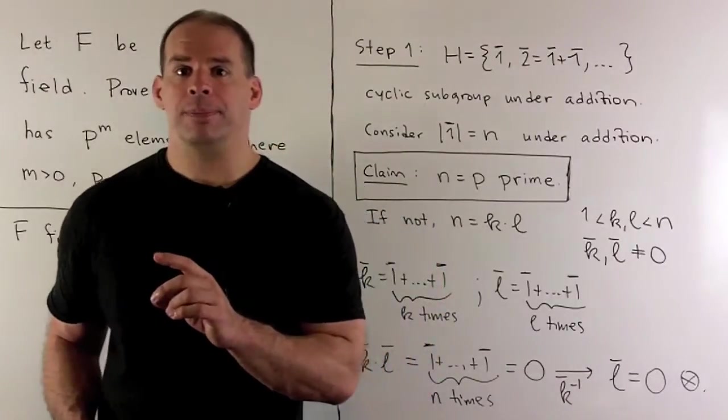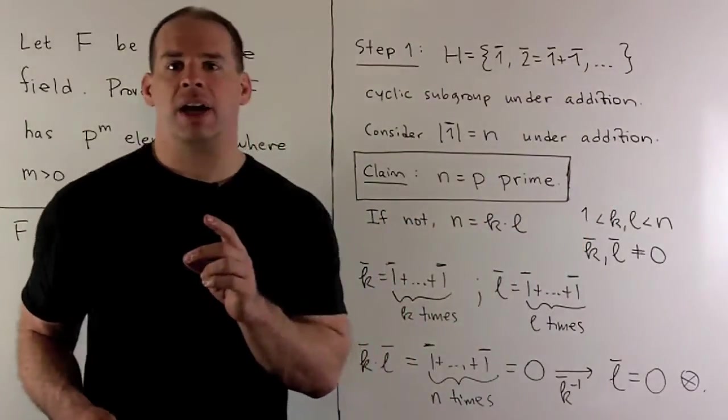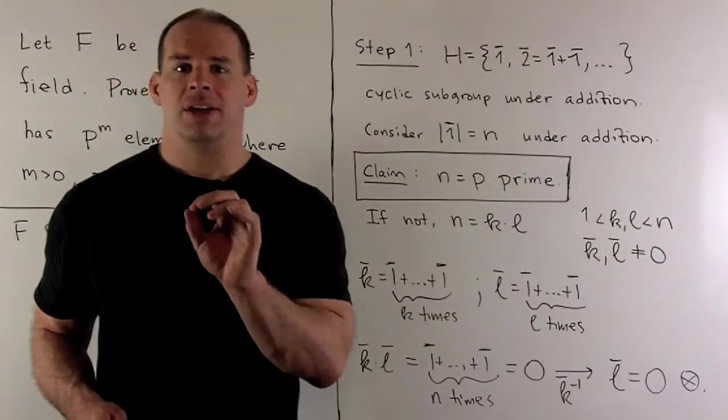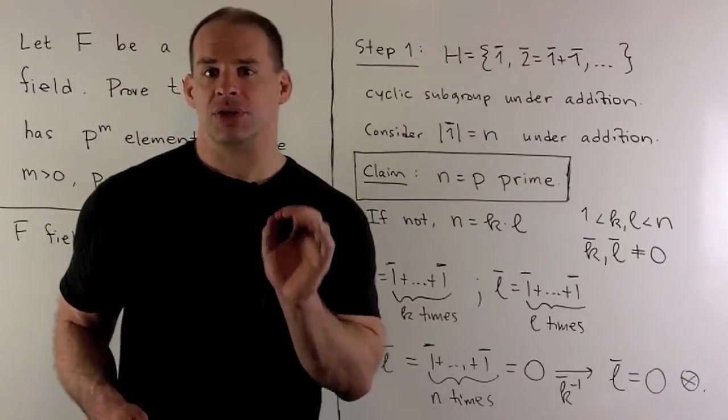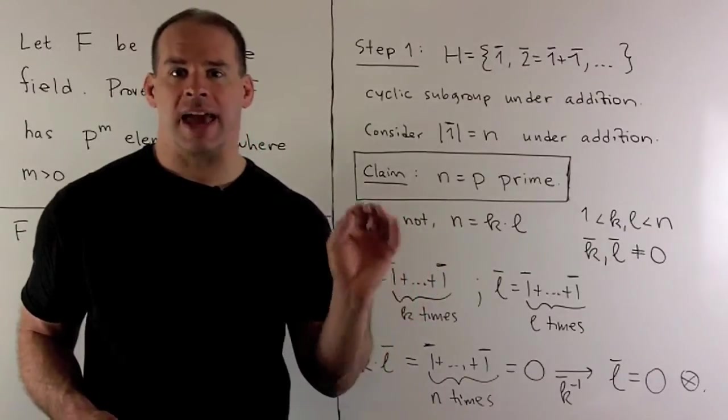Since our group's finite, the subgroup, which we'll call H, is also going to be finite. So, that's going to mean there's going to be some small integer n, such if I add one bar to itself n times, we get zero, the additive identity.